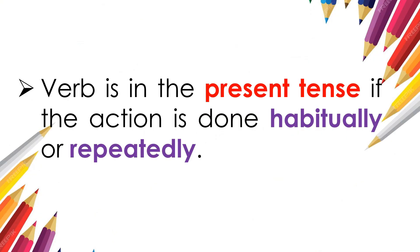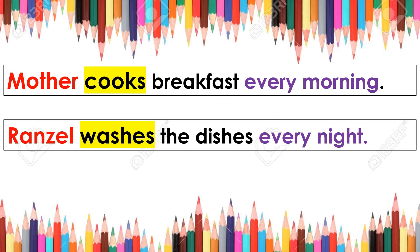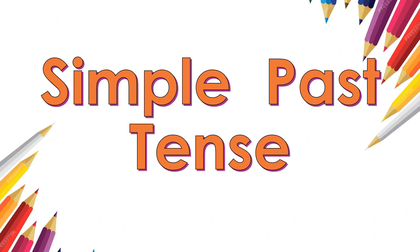Simple present tense. A verb is in the present tense if the action is done habitually or repeatedly. Examples: Mother cooks breakfast every morning. Ransel washes the dishes every night.